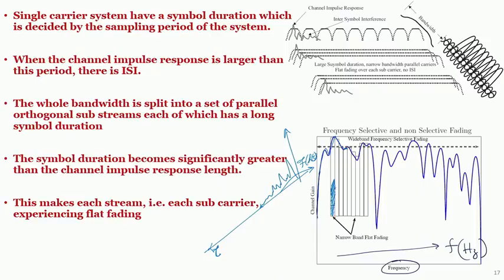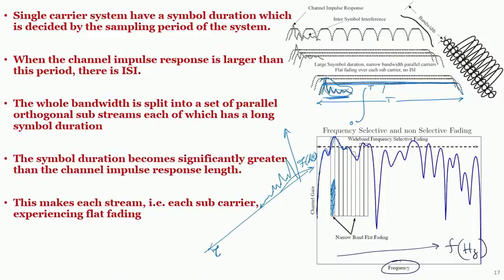Effectively, in the time domain, the signal sees a single equivalent path because all multipath components get added together via matched filtering. The receiver processing performs integration from 0 to T. Since the pulse shape is rectangular over interval T, it is a constant value, so all paths accumulate to form an equivalent impulse or sample of a particular phase. If there is a single equivalent delay, the result is flat fading across that subcarrier.